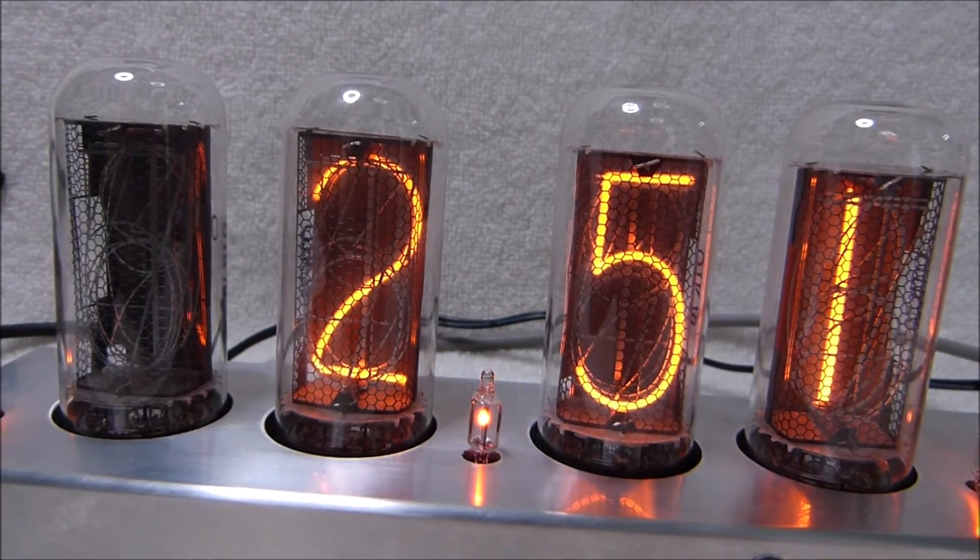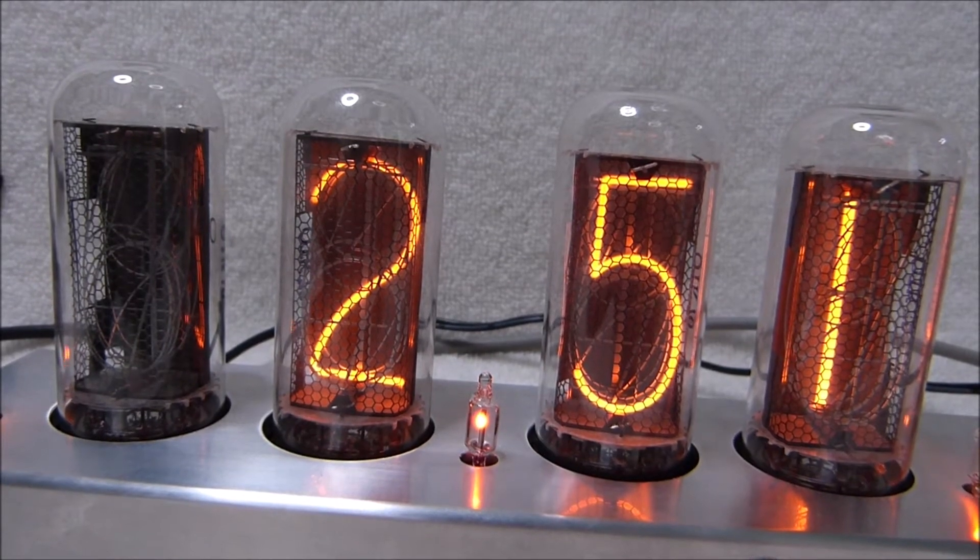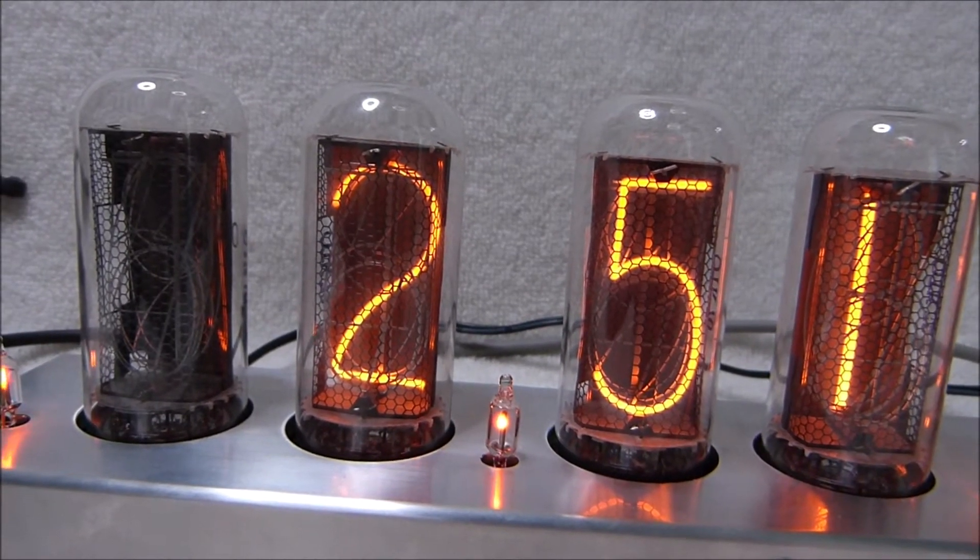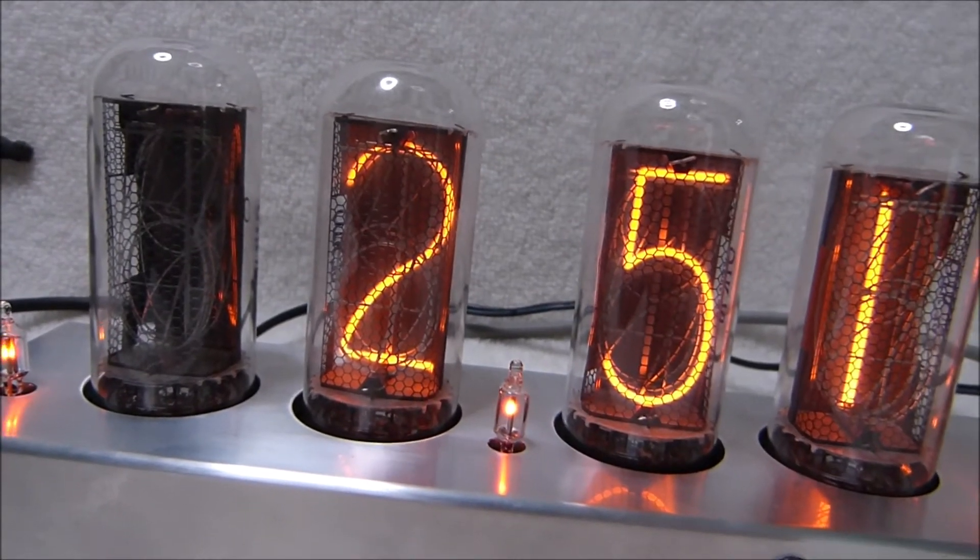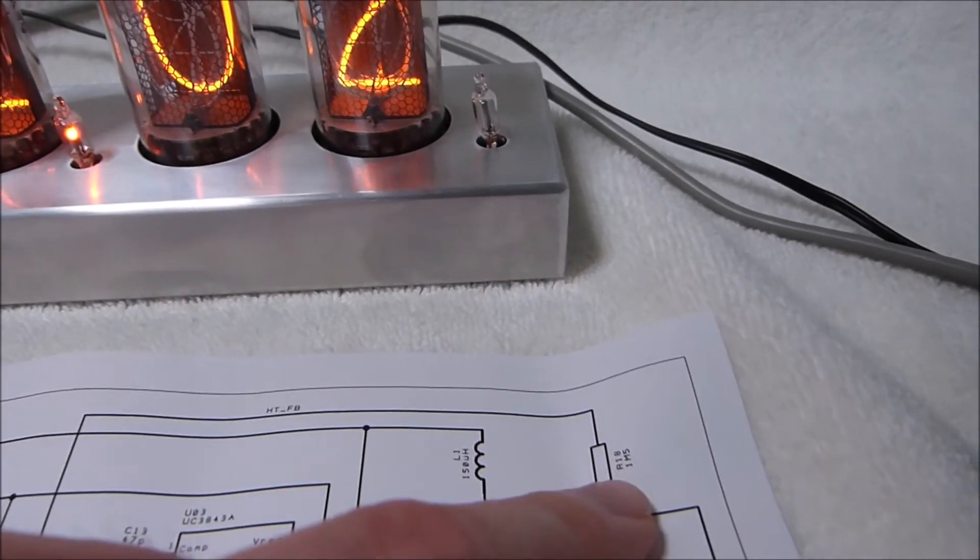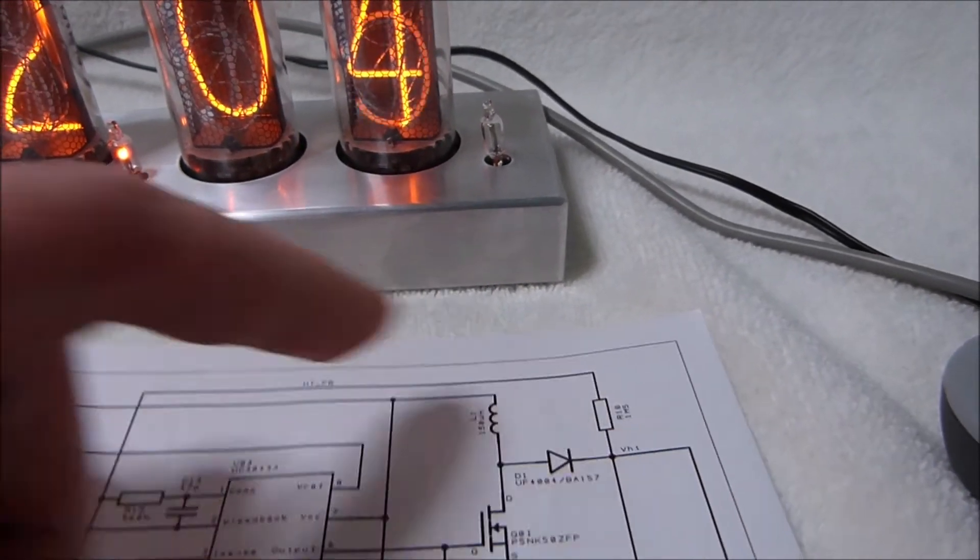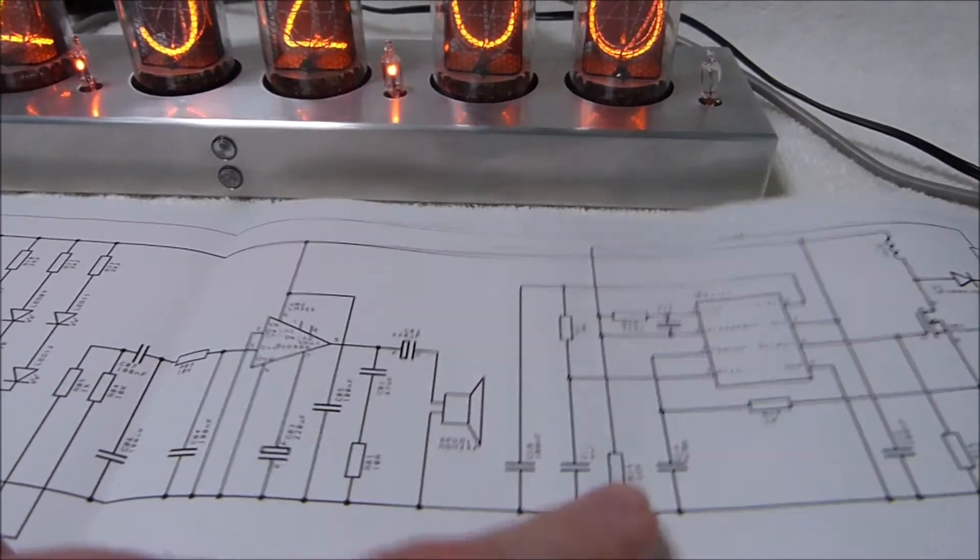I decided to take a different approach and raise the high voltage supply up to 175 volts. As designed, this clock has a fixed high voltage supply whose output voltage is set by a pair of resistors that form a voltage divider. Specifically this 1.5 mega ohm resistor here, R18, and this 22 kilo ohm resistor here, R14.